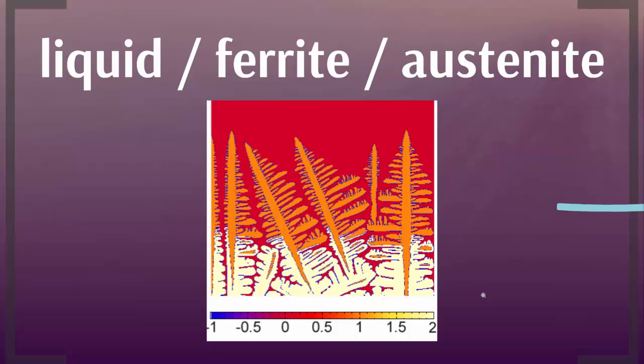Actually we have more than three phase fields here, so it's not only liquid, ferrite, and austenite, but you may notice that we've got two different oriented ferrite grains. So we have a phase field for ferrite grain one and another phase field for ferrite grain number two.